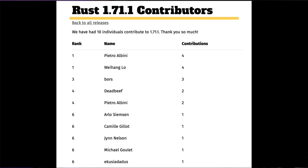Rust 1.71.1 was released on August 3rd, 2023, thanks to the hard work of eight contributors — at least, I count eight after I throw out the bot that merges stuff and merge Pietro Albini back into a single person.